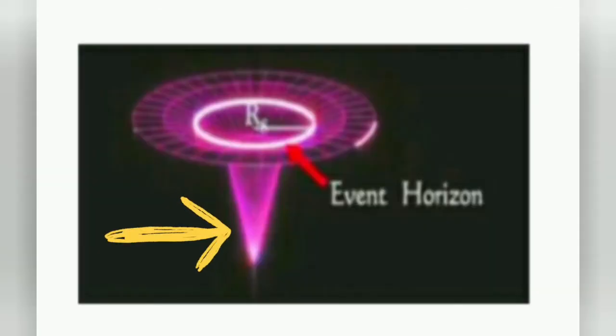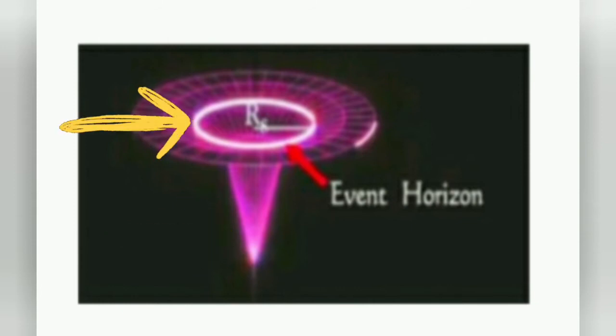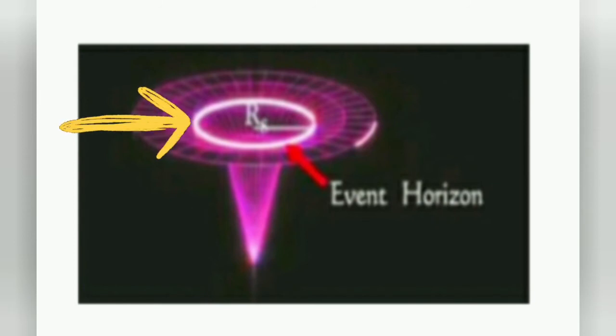Here we have a star that is 20 times the mass of the sun. In this space-time diagram, we have a structure. If you see a bright ring mark, this is the event horizon zone. Within this zone, one object can be removed — it can be removed from the outside.